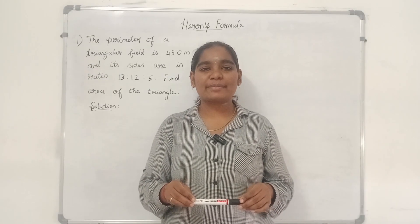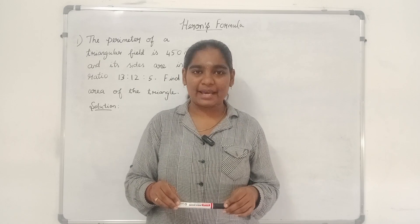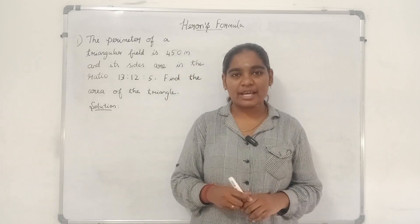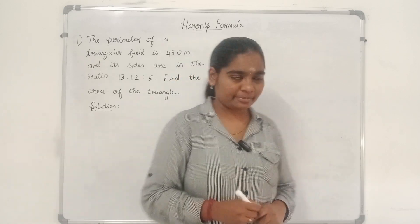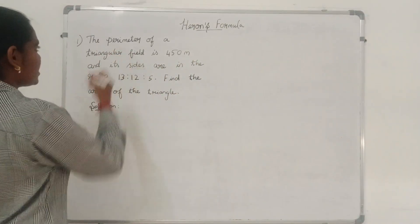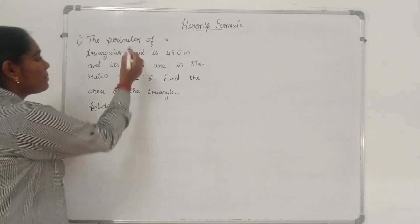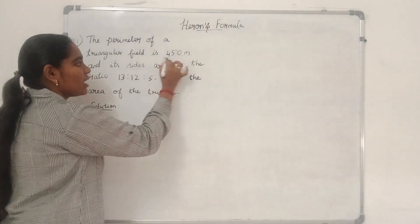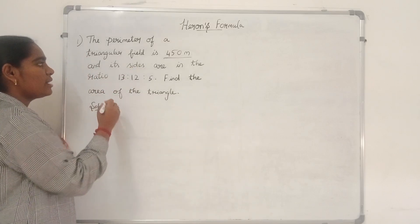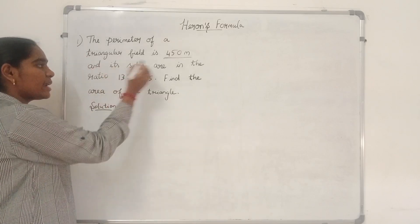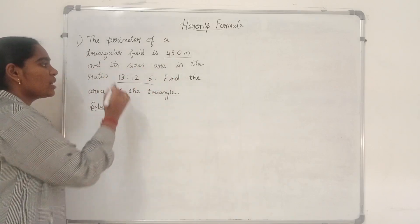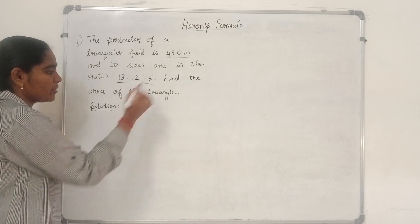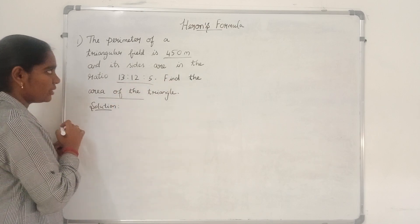Hello students, relax, sit back and let's enter math class. In today's class we are going to do a problem based on Heron's formula. In this question, the perimeter of a triangular field is given as 450 meters and the sides are given in the ratio 13 is to 12 is to 5. We have to find the area of the triangle.